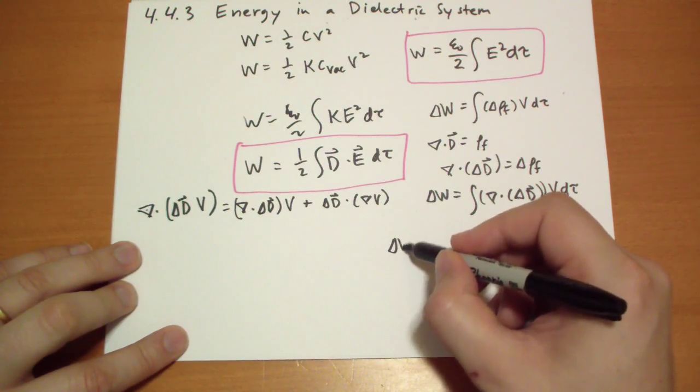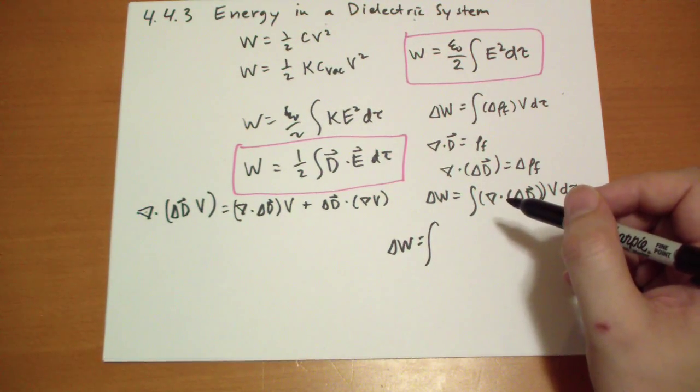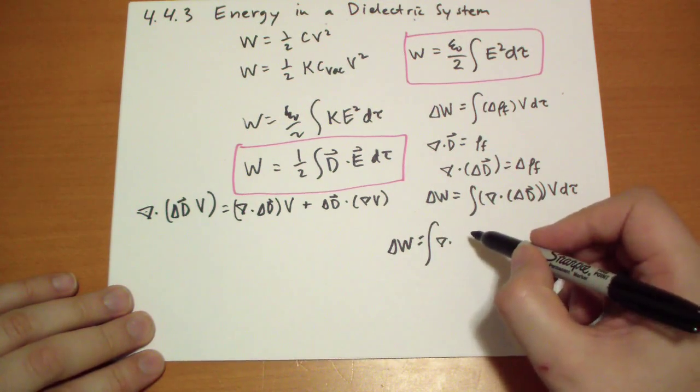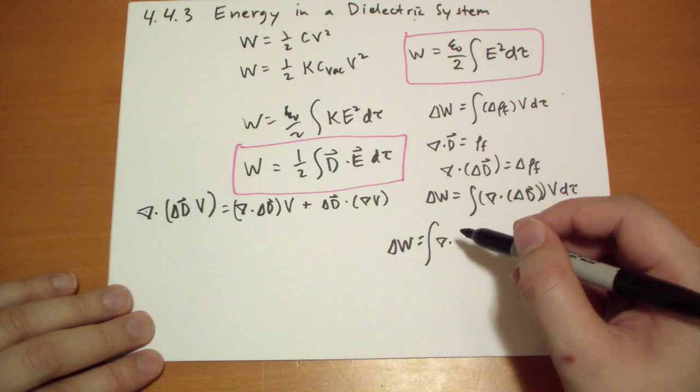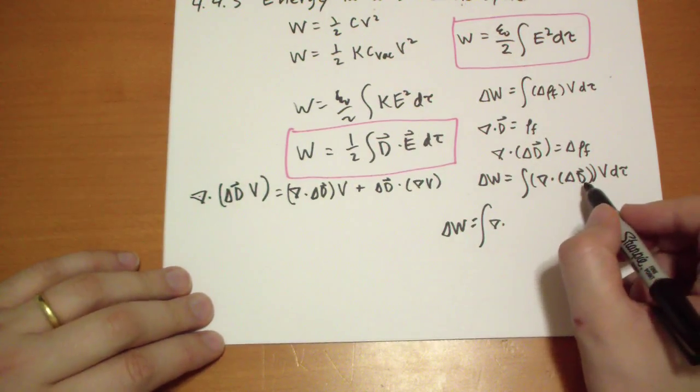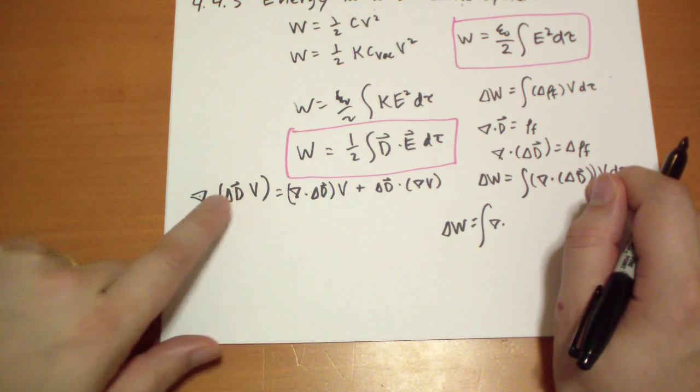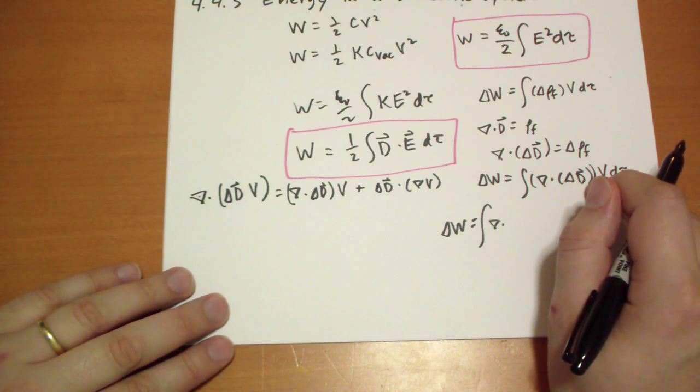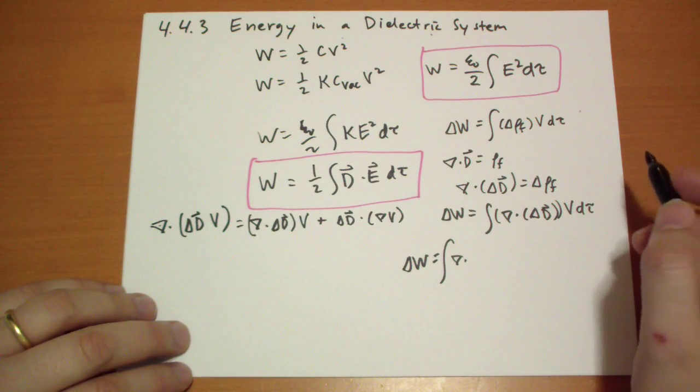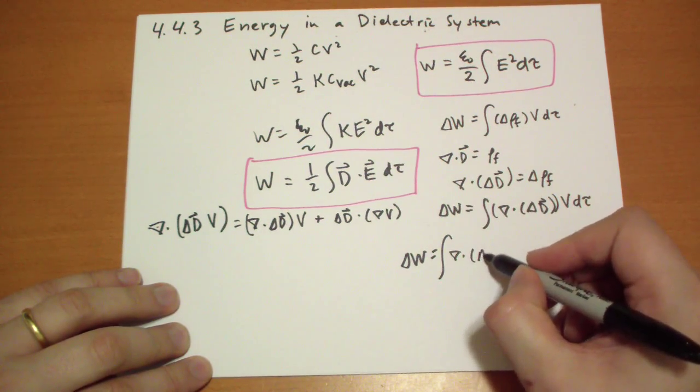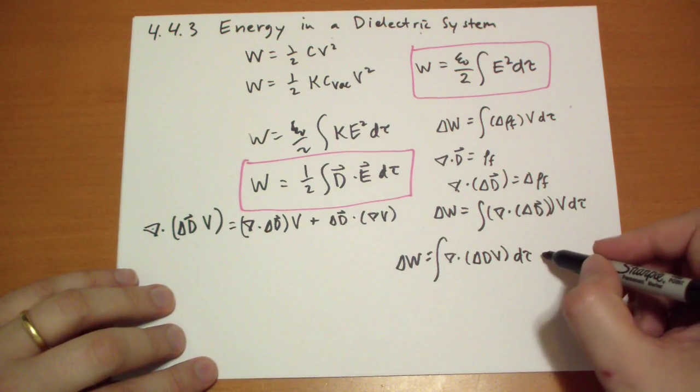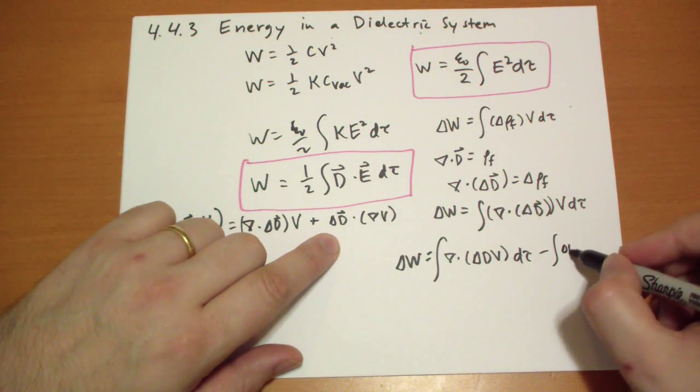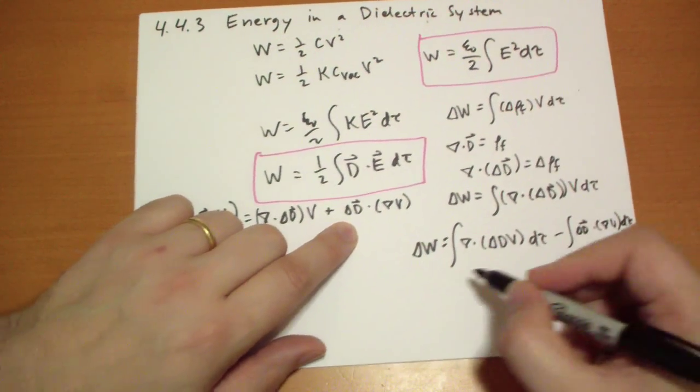The divergence of a small change in D vector times the potential, which is a scalar field, that is going to equal the divergence of, well, let's calculate the divergence of the small change in D vector, and then multiply by V, and then we can add the small change in D dot with the gradient of the potential. So, let's plug that back in, so we get the small amount of work it takes to make that small change in the D field.